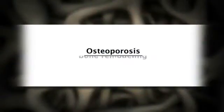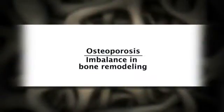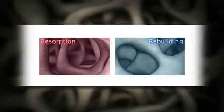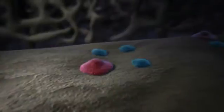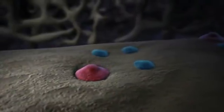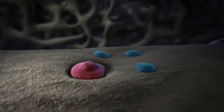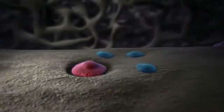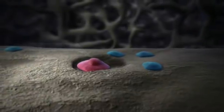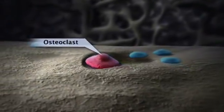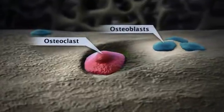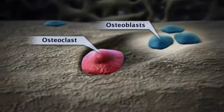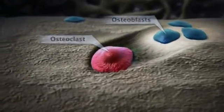Osteoporosis results from an imbalance in bone remodeling. Removal, also called resorption, outpaces formation of new bone. Before menopause, there is a relative balance between the removal of old bone by cells called osteoclasts and the formation of new bone by cells called osteoblasts. This is a complex and constant process.